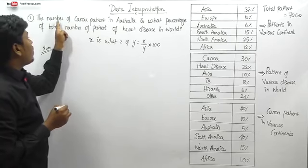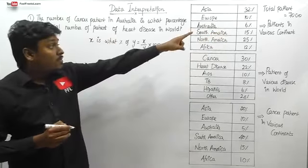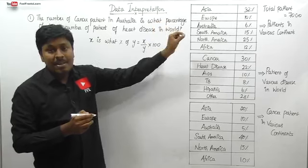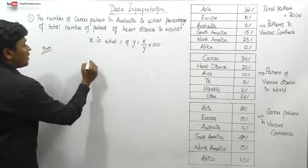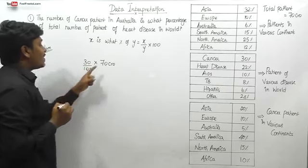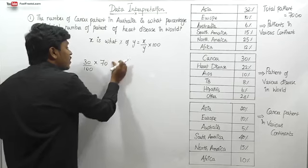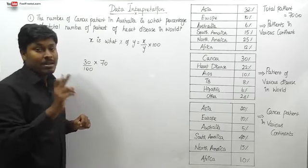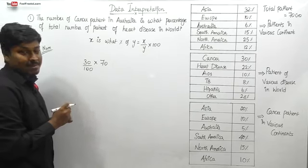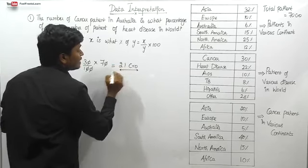First, let me find the numerator — the total number of cancer patients in Australia. We know there are 70 crores total. Cancer patients are 30% of this, so 70 into 30 divided by 100. We can cancel zeros: 7 into 3 equals 21. So 21 crore is the total number of cancer patients across all continents.